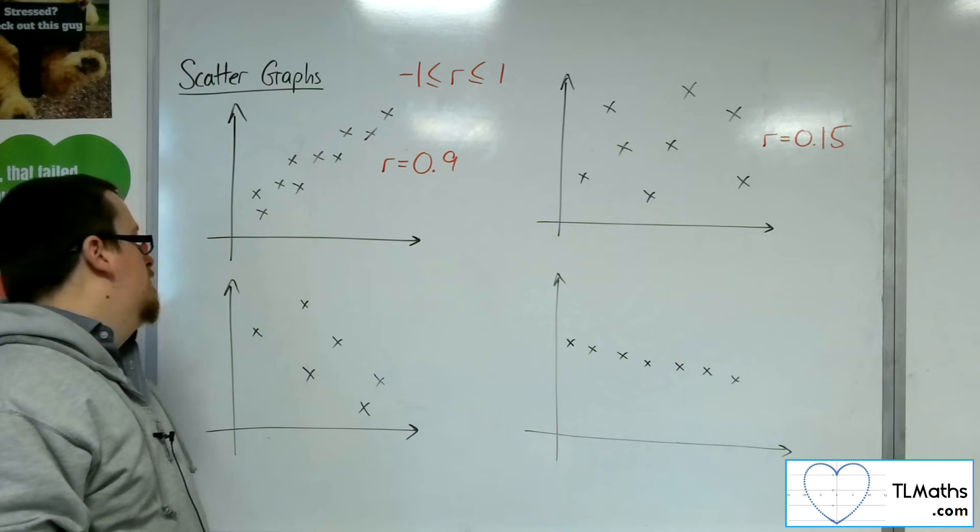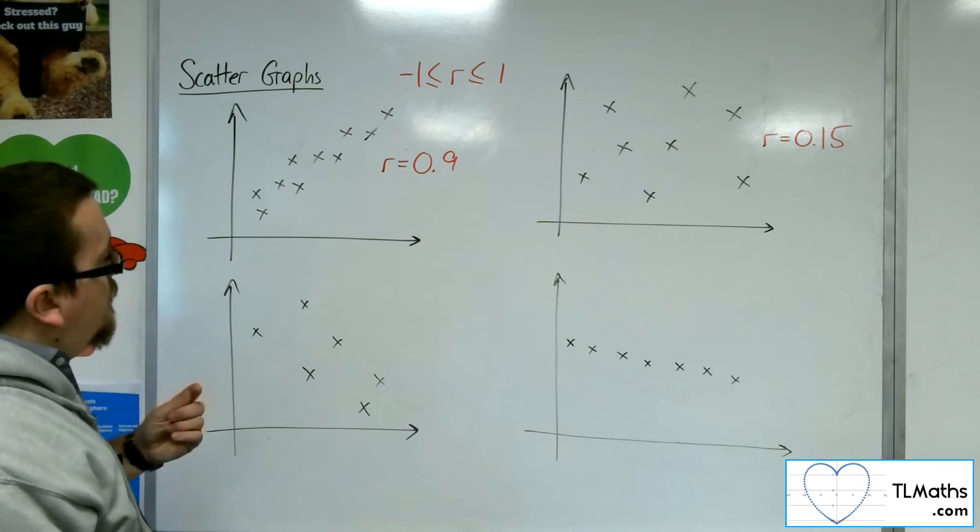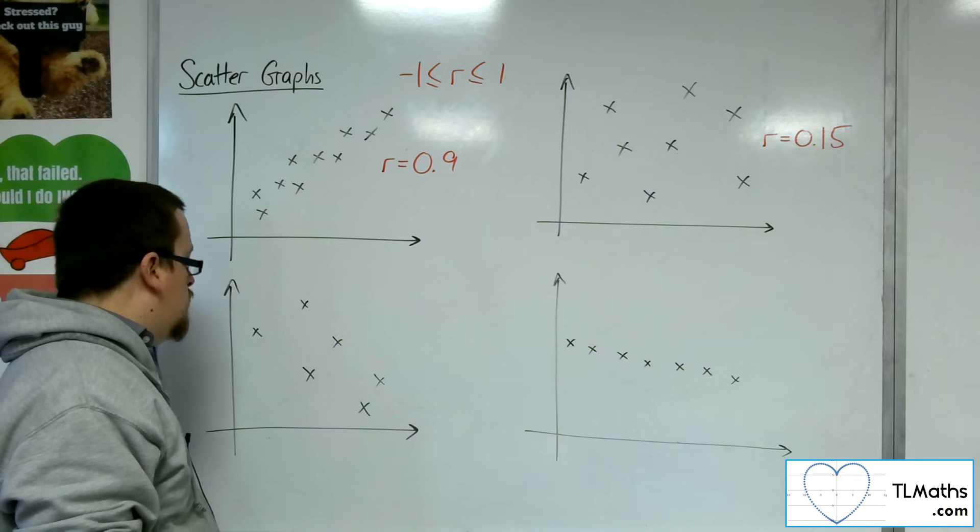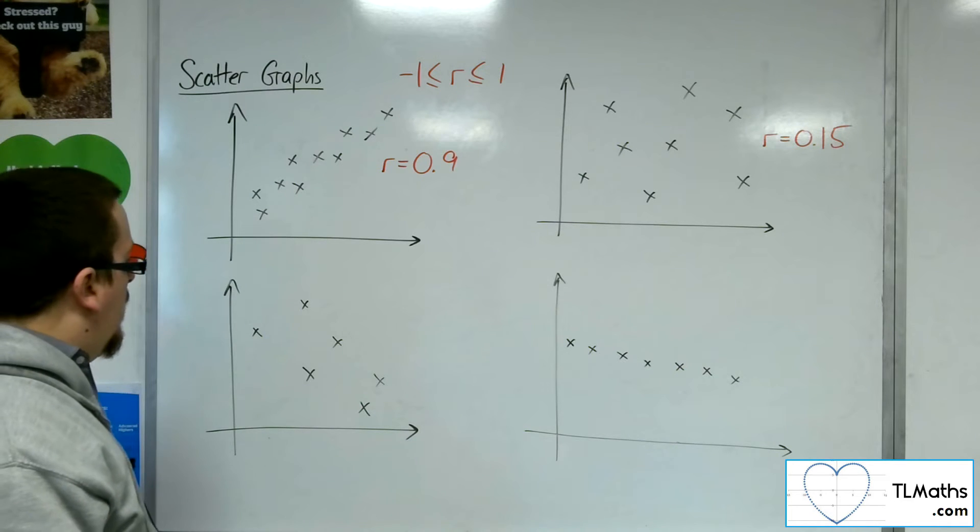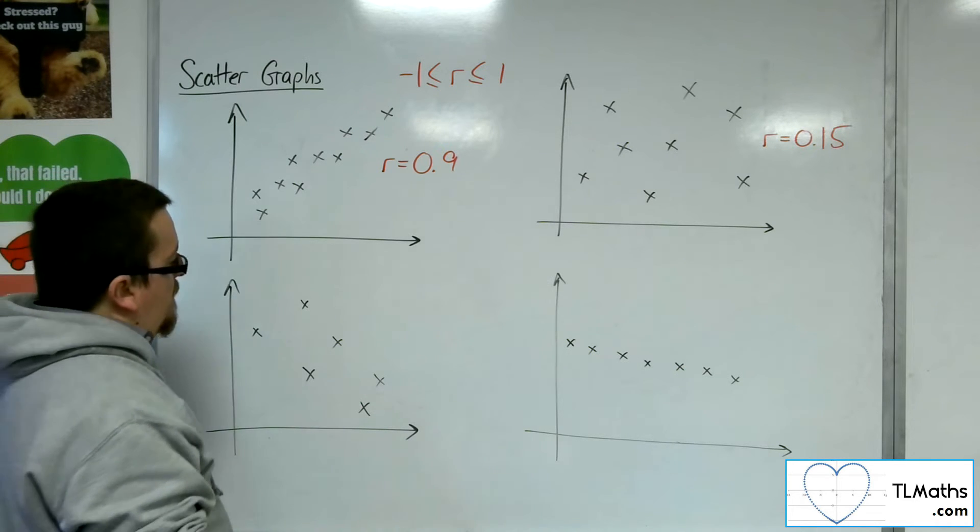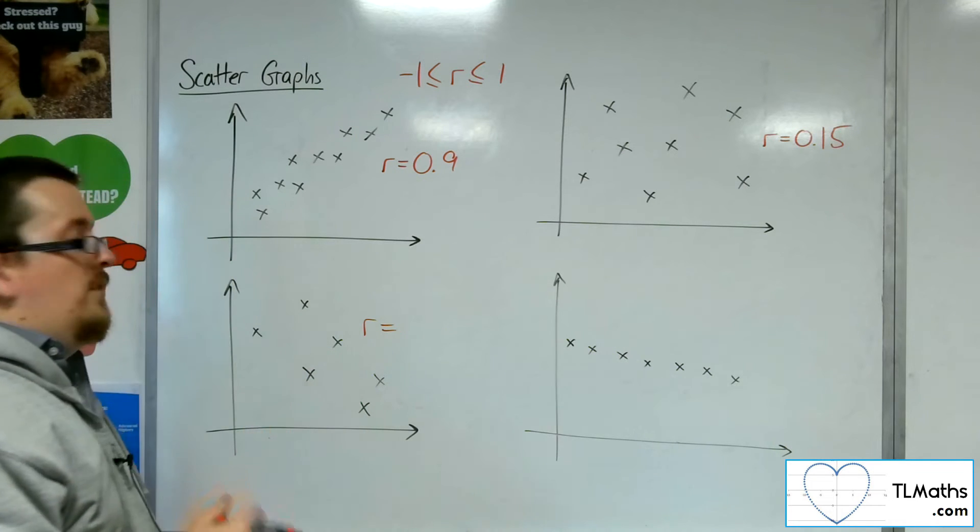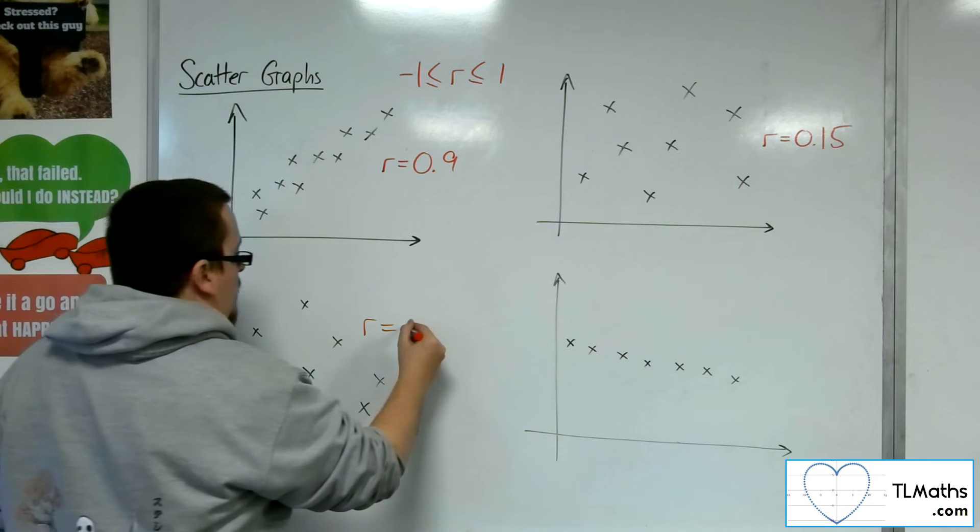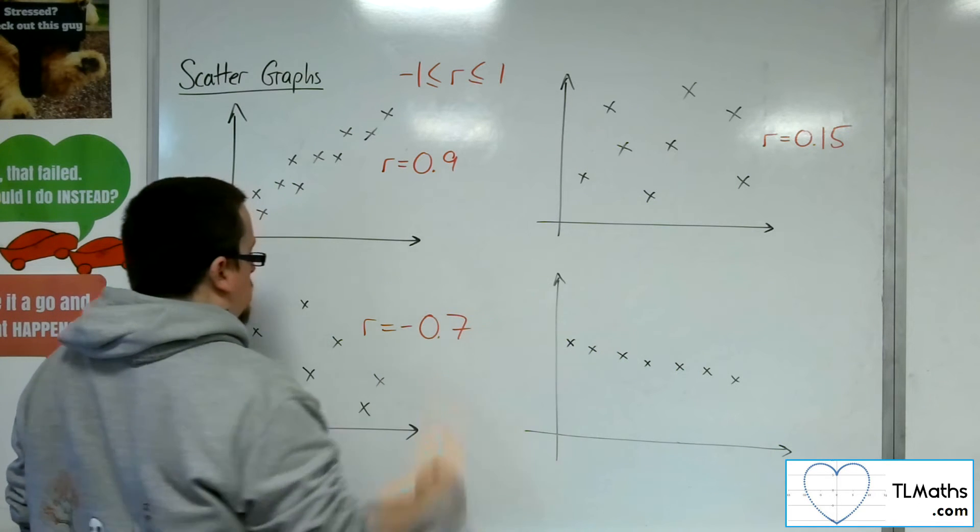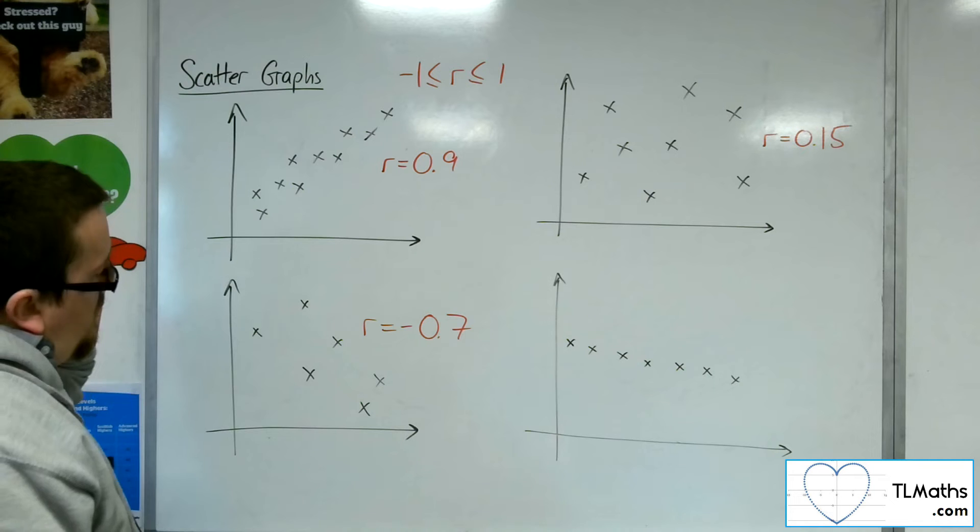This one looks more like negative correlation. It's not going to be that strong, though. So I'd be going for something like r equals minus 0.7. That seems reasonable.